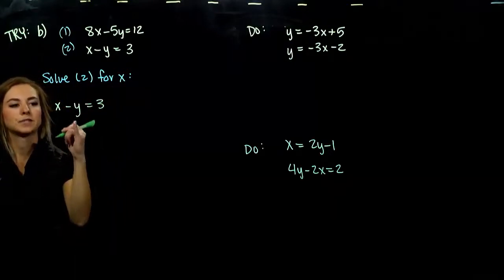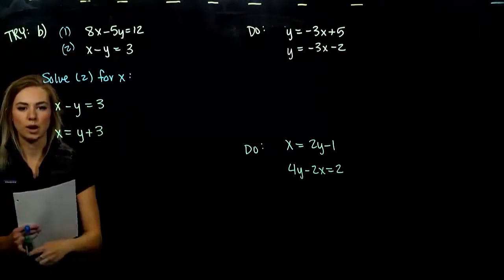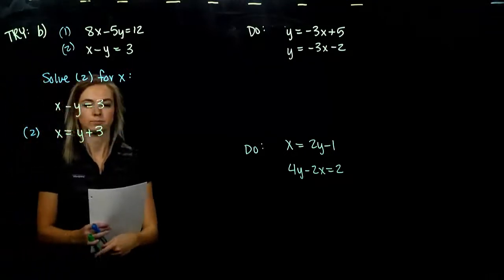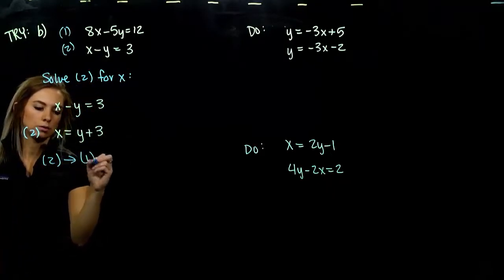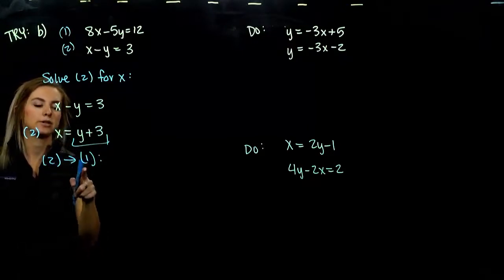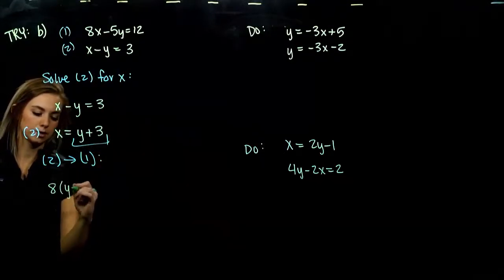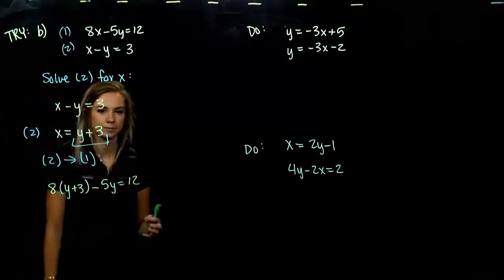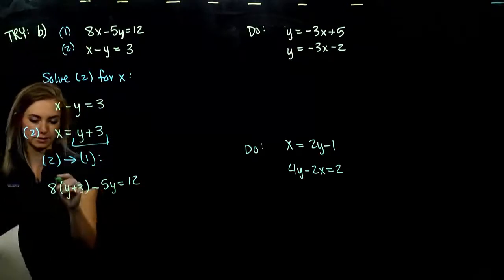You could isolate a different variable and come to the same answer — this is just the easiest route. Taking equation 2 and solving for x: to get x alone, we add y to both sides, giving x equals y plus 3. This is our new equation 2, still equivalent. Wherever I see an x in equation 1, I plug in y plus 3.